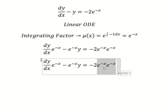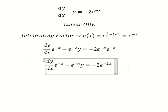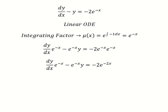So e to the power of negative x multiplied by e to the power of negative x gives us e to the negative 2x. Later, we need to put the integral on both sides.